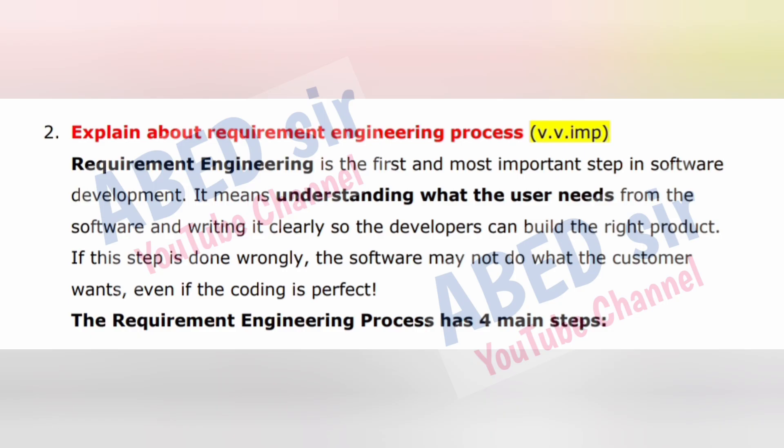The next important long question is: Explain the requirement engineering process. Requirement engineering is the first and most important step in software development. It means understanding what the user needs from the software and writing it clearly so the developers can build the right product. If this step is done wrongly, the software may not do what the customer wants, even if the coding is perfect. The requirement engineering process has four main steps.